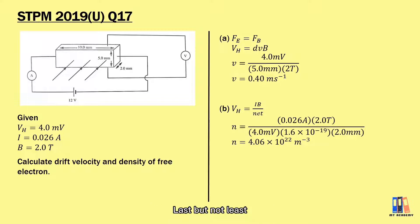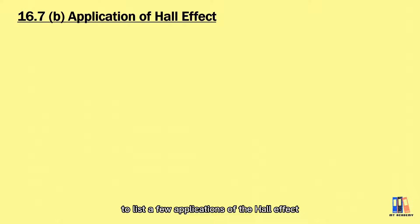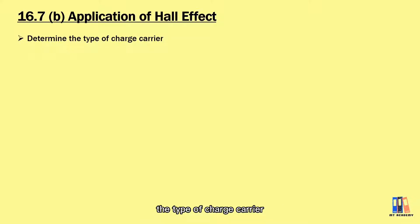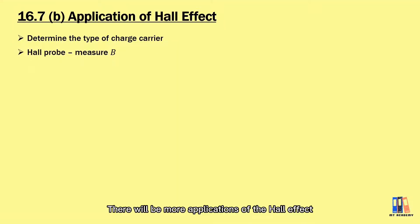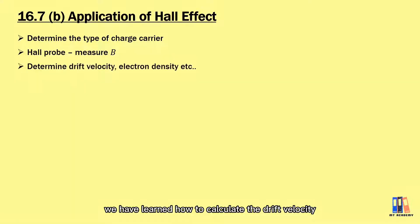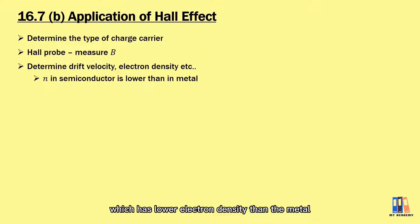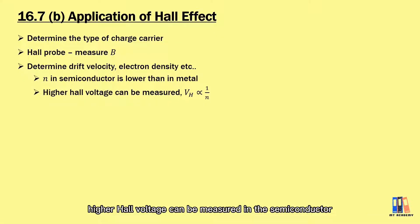Last but not least, let's list a few applications of the Hall effect. From our earlier discussion, the Hall effect can be used to determine the type of charge carrier, especially for semiconductors. There is also an instrument called the Hall probe that can measure the magnetic flux density. Additionally, we can calculate the drift velocity and density of free electrons in a conductor. This is especially useful for semiconductors, which have lower electron density than metals. Due to the lower electron density in semiconductors, a higher Hall voltage can be measured.